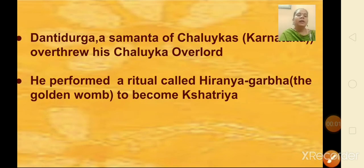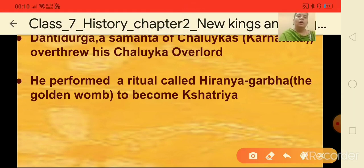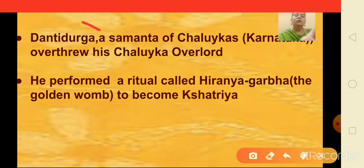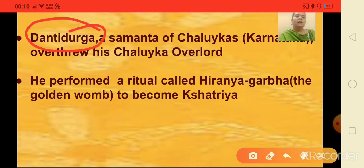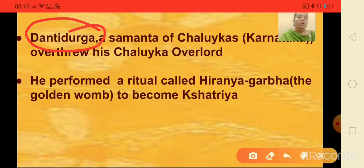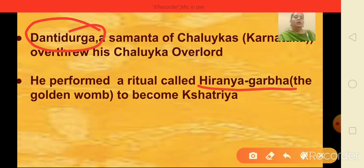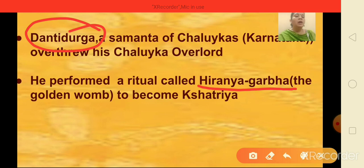Dantidurga was a samanta of the Chalukyas in Karnataka. He overthrew his Chalukya overlord and performed a ritual called Hiranyagarbha, meaning the golden womb. He did this because he wanted to become a Kshatriya.